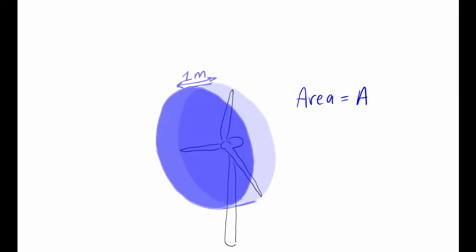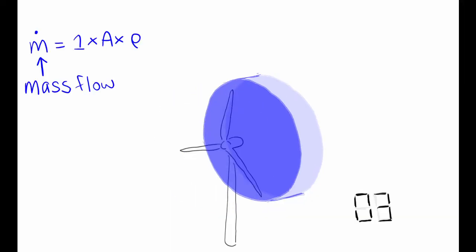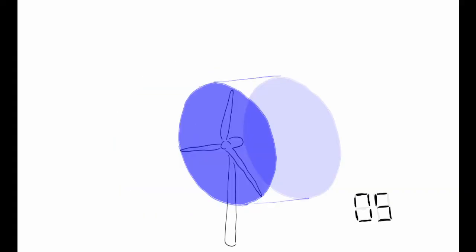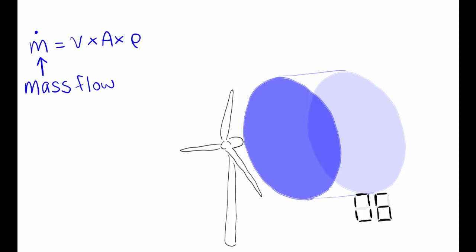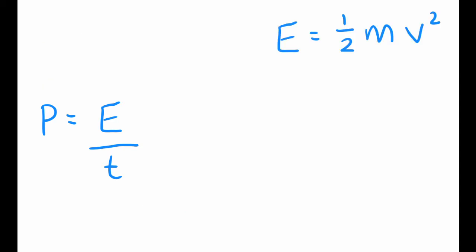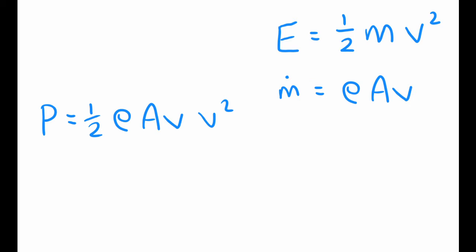The wind turbine blades sweep out a disk, and over time it captures some of the energy of the air flowing through that disk. If we call the area of the disk A, then a one-meter-thick cylinder of air would have A times rho kilograms of air in it. If the wind speed is V meters per second, then the mass flow is V times A times rho kilograms per second. The amount of kinetic energy of that air passing through the disk is the power — the amount of energy per unit time. So the total power P of air with wind speed V flowing through a disk with area A is given by this equation.